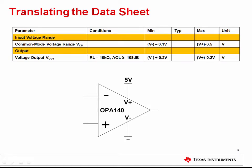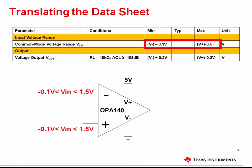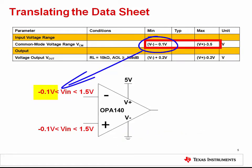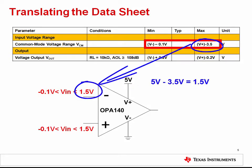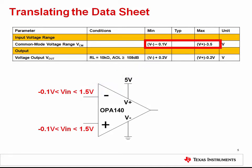Let's look at how common mode voltage and input and output voltage swing are typically defined on a datasheet. The common mode voltage range is defined here with the minimum and maximum limits given relative to the power supplies. The negative supply V minus is 0 volts in this case, so 0 volts minus 0.1 volts gives us minus 0.1 volts for the minimum common mode limitation. The positive supply V plus is 5 volts, so 5 volts minus 3.5 volts gives us 1.5 volts for the maximum common mode limitation. Therefore, applying an input common mode voltage below minus 0.1 volts or above 1.5 volts will result in non-linear output.